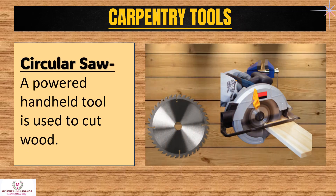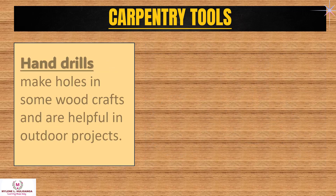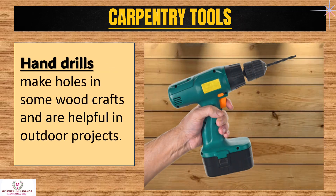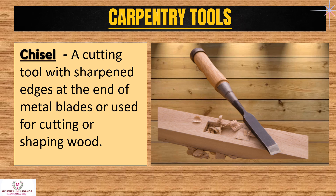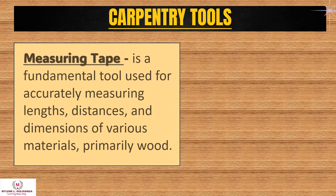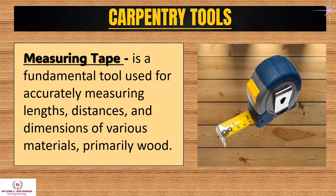Circular saw: a powered handheld tool used to cut wood. Hand drills: make holes in some wood crafts and are helpful in outdoor projects. Chisel: a cutting tool with sharpened edges at the end of metal blades, used for cutting or shaping wood. Measuring tape: a fundamental tool used for accurately measuring lengths, distances, and dimensions of various materials, primarily wood.